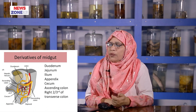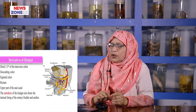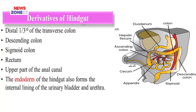The derivatives of the midgut: duodenum distal to the major duodenal papilla, loops of jejunum and ileum, appendix, cecum, ascending colon, and right two-thirds of the transverse colon. The derivatives of the hindgut: left one-third of the transverse colon, descending colon, sigmoid colon, rectum, and upper part of the anal canal — that is, above the pectinate line.